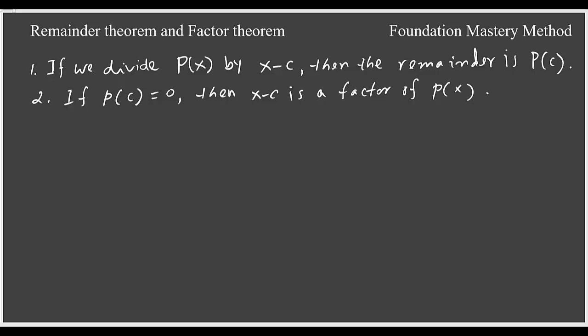We'll be talking about remainder theorem and factor theorem. If we divide P(x) by x - c, then the remainder is simply P(c). On the other hand, if P(c) = 0, then x - c is a factor of P(x), meaning x - c will divide P(x) evenly without any remainder.